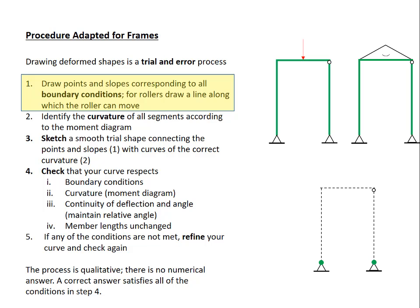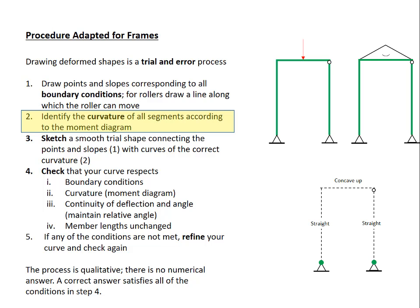Step 2, identify the curvature of all the segments according to the moment diagram. The beam is concave up. There's no moment in either of the other two members. Those members are therefore straight.